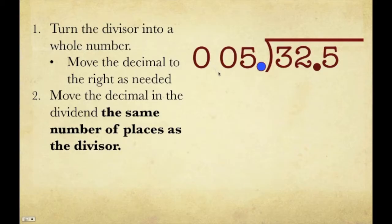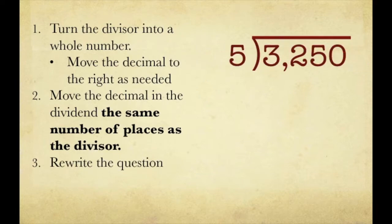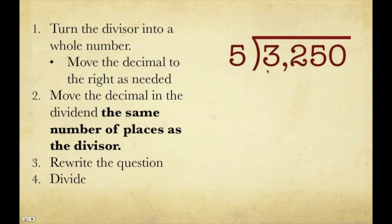We had a decimal point here and moved it over two places to the right. Since we moved that decimal two places to the right, we're also going to move this decimal two places to the right. The problem is that we only have one number here and we have to move the decimal two places. So what do we do? We annex a zero. Now we have enough numbers to move the decimal two times to the right. Step 3 is to rewrite the question, so now we have 3,250 divided by 5.